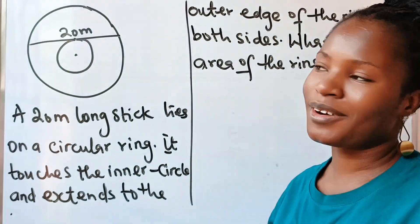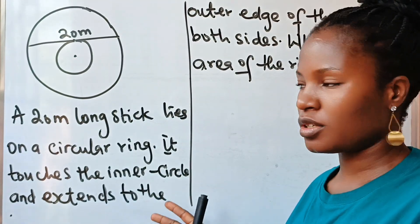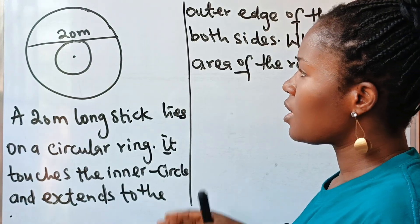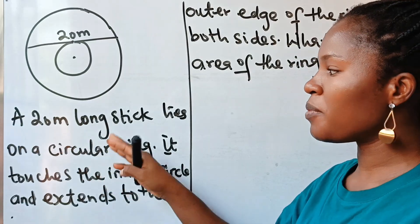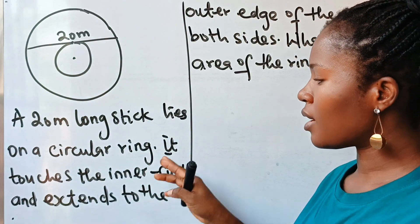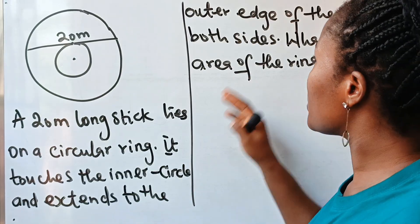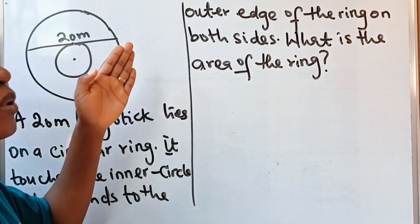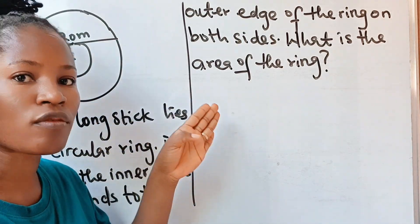Welcome back to my channel. Now let's solve this amazing math question. The question says that we should find the area of this ring. A 20 meter long stick lies on a circular ring. It touches the inner circle and extends to the outer edge of the ring on both sides. The question says: what is the area of the ring?